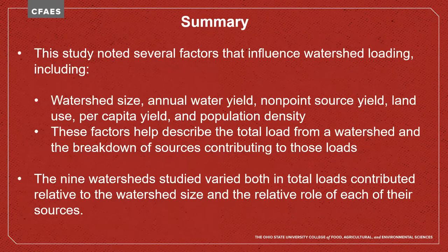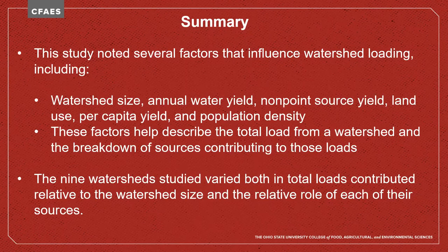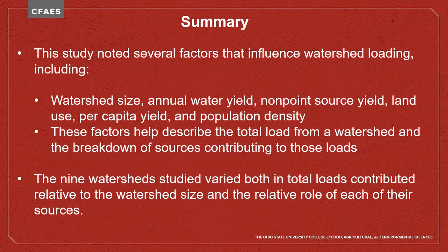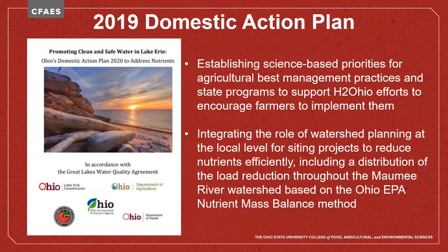The report notes there are several factors that influence nutrient loading, and these individual factors help distinguish the total nutrient load from a watershed in addition to the breakdown of sources. The nine total watersheds varied both in total loads contributed relative to their size and the role of their sources. Understanding these differences will help inform future decisions as nutrient reduction efforts are pursued to meet the goals of international and national agreements for Lake Erie. The report is available online and goes through those nine watersheds specifically, giving a breakdown of what those differences are to enable a watershed-level approach for targeted management.